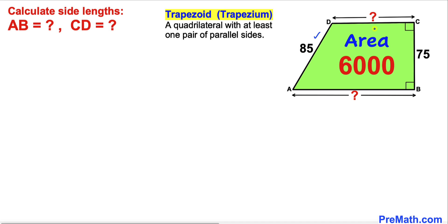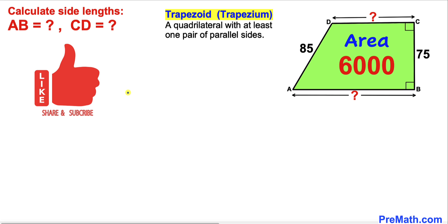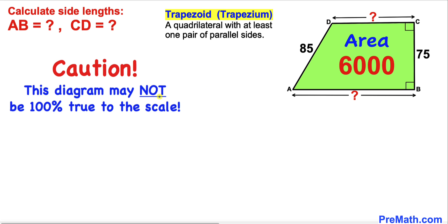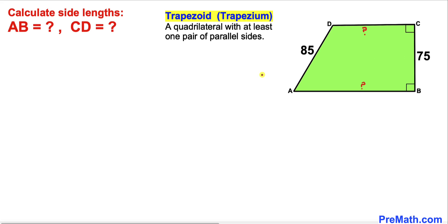We are going to calculate side lengths AB and CD. Keep in mind that this quadrilateral is a trapezoid because AB is parallel to CD. Please give a thumbs up and subscribe before we proceed. Note that this figure may not be 100% true to scale.